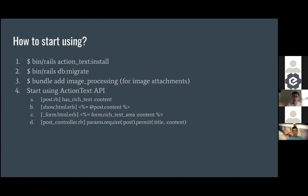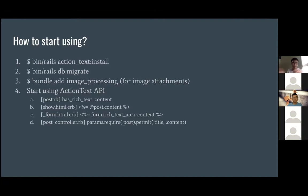It's like how we always see `has_one`, `has_many` — this time round it's `has_rich_text`, and then the 'content' part is just the name of the field you want to use. So in this case I have a post with a title and content. Then to show the what-you-see-is-what-you-get content in ERB, you can just do `@post.content` and it will automatically render the entire markup — with images, everything — for you.